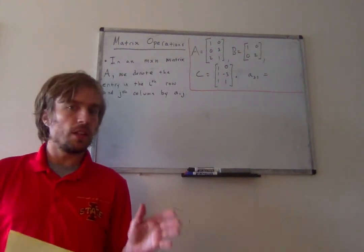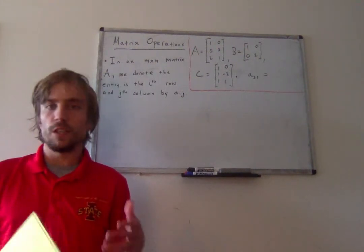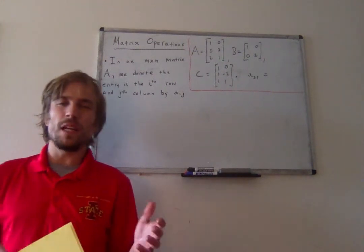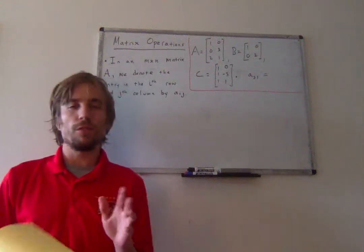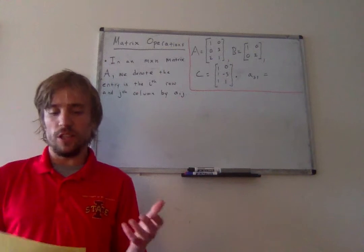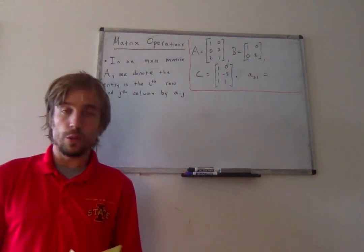matrices act a lot like vectors. Unsurprisingly, right? Because vectors are just matrices with one column. And so what I mean actually by that, they act very differently from vectors in a lot of ways, is that we can perform similar operations of addition and scalar multiplication that we were doing with vectors.